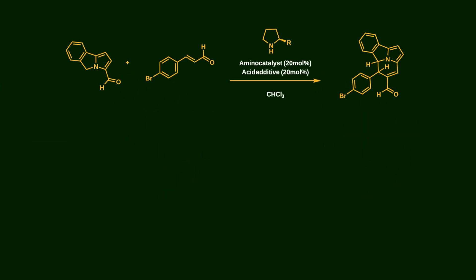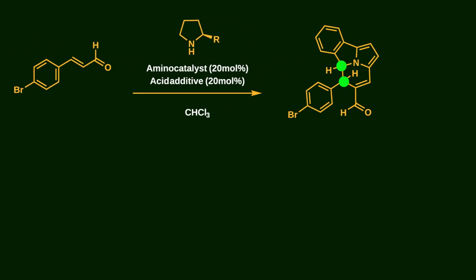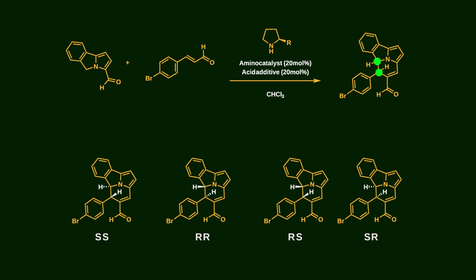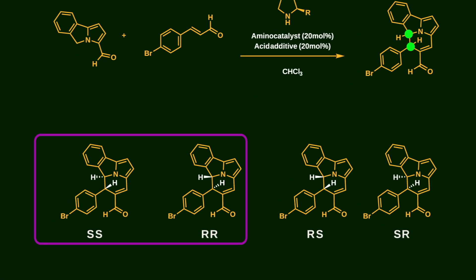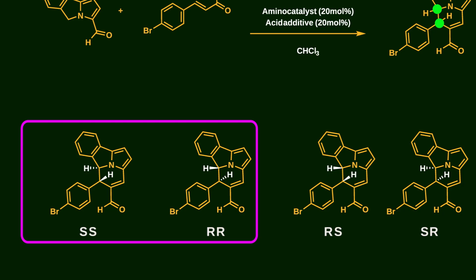Now let's take a deep dive into enantioselectivity. Coupling of 2π components introduces two new chiral centers in the molecule. As a result, there are four stereoisomers. Calculations indicate that the trans product is more stable than the cis conformation, but among the two possible trans conformations, one is more stable than the other.